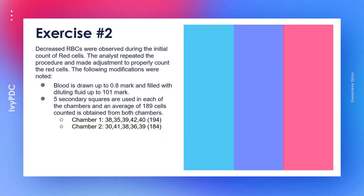Second RBC example: a decreased red blood cell count was observed during the initial count, so the analyst repeated the procedure with modifications. Blood was drawn up to the 0.8 mark and filled with diluting fluid up to the 101 mark. Five secondary squares are used in each chamber, with an average of 189 cells. Chamber one counts: 38, 35, 39, 42, and 40; chamber two counts: 30, 41, 38, 36, and 39. Pause the video if you want to try this on your own.